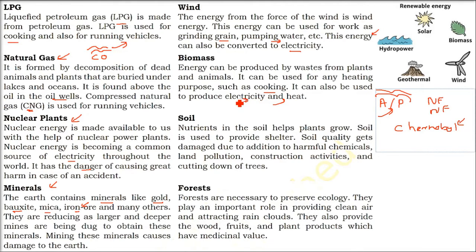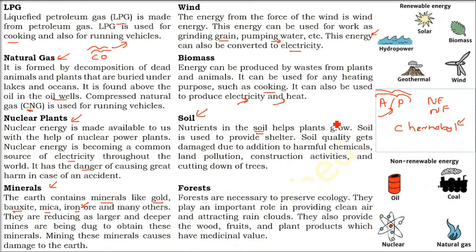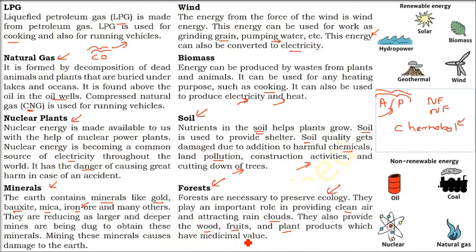Wood is used for heat. Soil is important because everyone grows in soil — nutrients in the soil help plants grow and soil is used for construction too. But the problem is we are polluting soil; soil pollution and soil degradation are occurring due to construction and cutting down trees ruthlessly. Forests preserve the ecological balance, give us clean air, help clouds form, and provide wood, fruit, plants, and products of medicinal value. We need to use these resources judiciously.